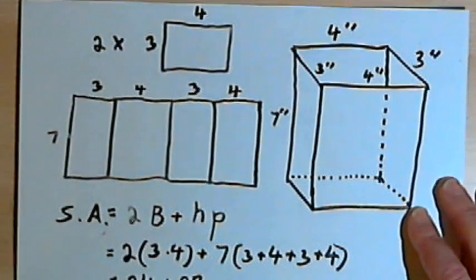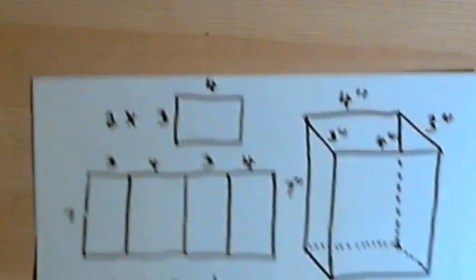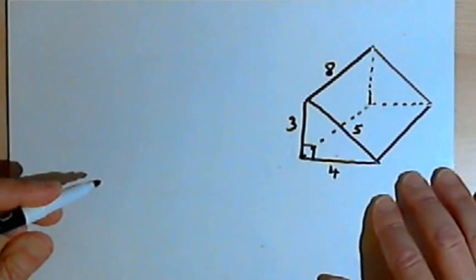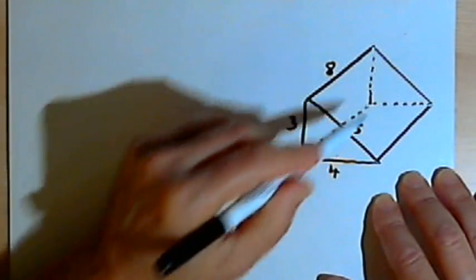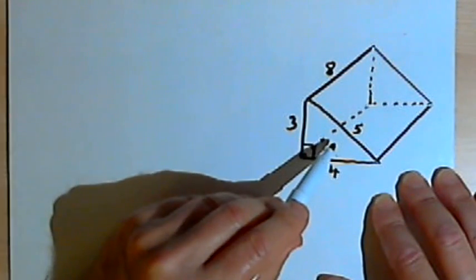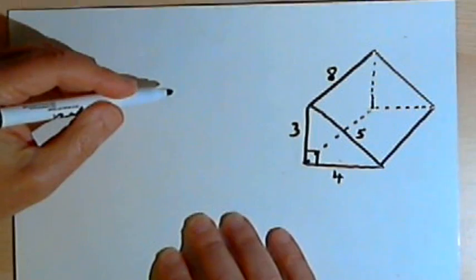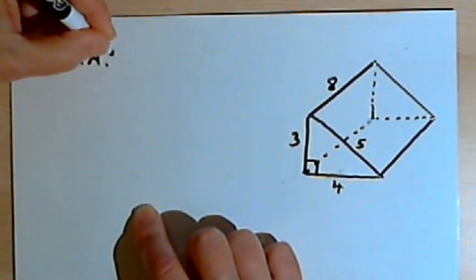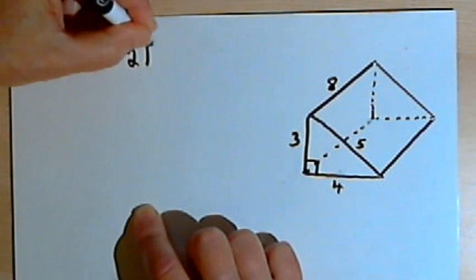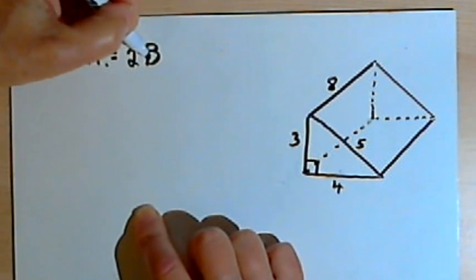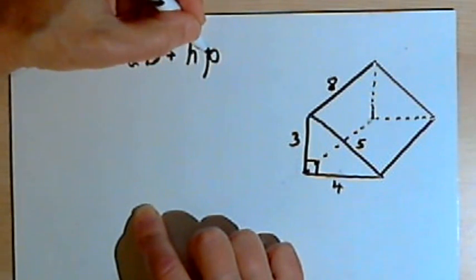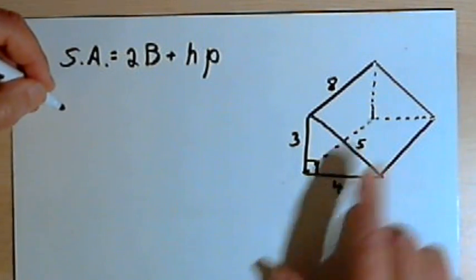Let's look at a different shaped prism. Here I've got a triangular prism, and nicely enough the two bases is a right triangle. So let's take the formula we used. The surface area is 2 times a capital B for the surface area of the base, plus the height times the perimeter. Let's plug our numbers in.